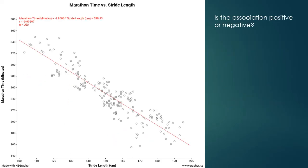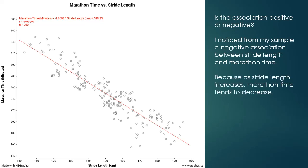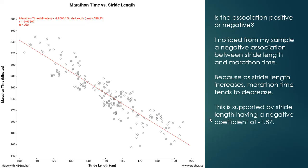Going back to marathon time versus stride length: is the association positive or negative? There is a negative association between stride length and marathon time, because as stride length increases, marathon time tends to decrease. A stride length of around 1.10m tends to correspond to a marathon time of about 330 minutes, whereas at a stride length of 1.80m we'd expect about 200 minutes. This is supported by stride length having a negative coefficient in the equation — a negative coefficient supports a negative association.